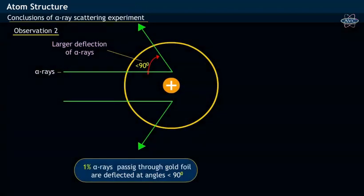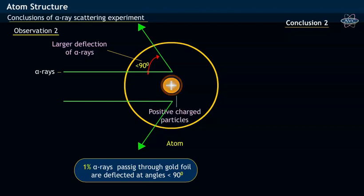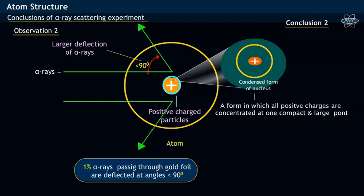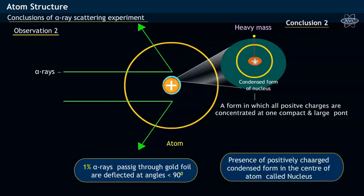From this observation, Rutherford concluded that the whole of positively charged particles is concentrated in the center of the atom and takes a condensed form as shown. This portion of positively charged heavy mass occupying small space is called the nucleus.